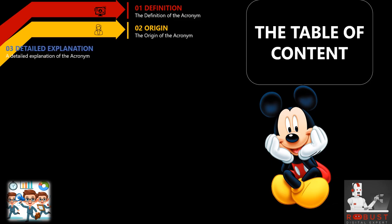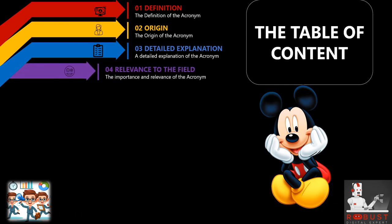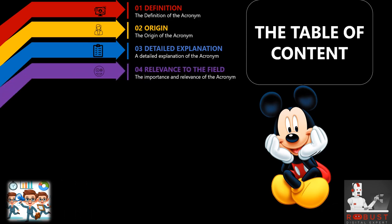Detailed explanation: We unpack the acronym, meticulously breaking it down into its constituent parts. We elaborate on the meaning behind each element, exploring specific terminology and associated concepts. Relevance to the Field: We explore the importance and relevance of the acronym in the field. We discuss how it addresses specific needs, resolves common challenges, or embodies key concepts within the discipline.